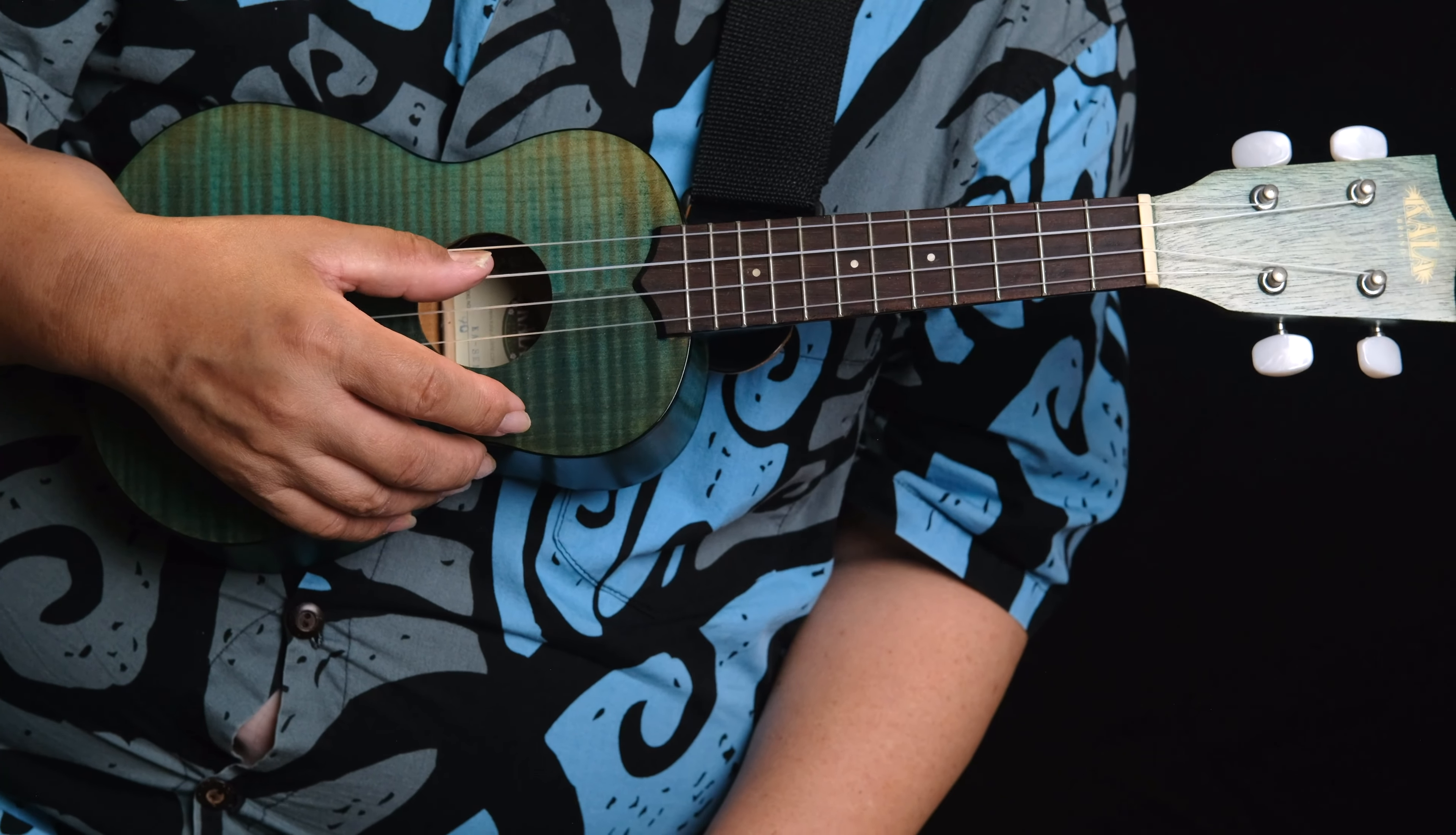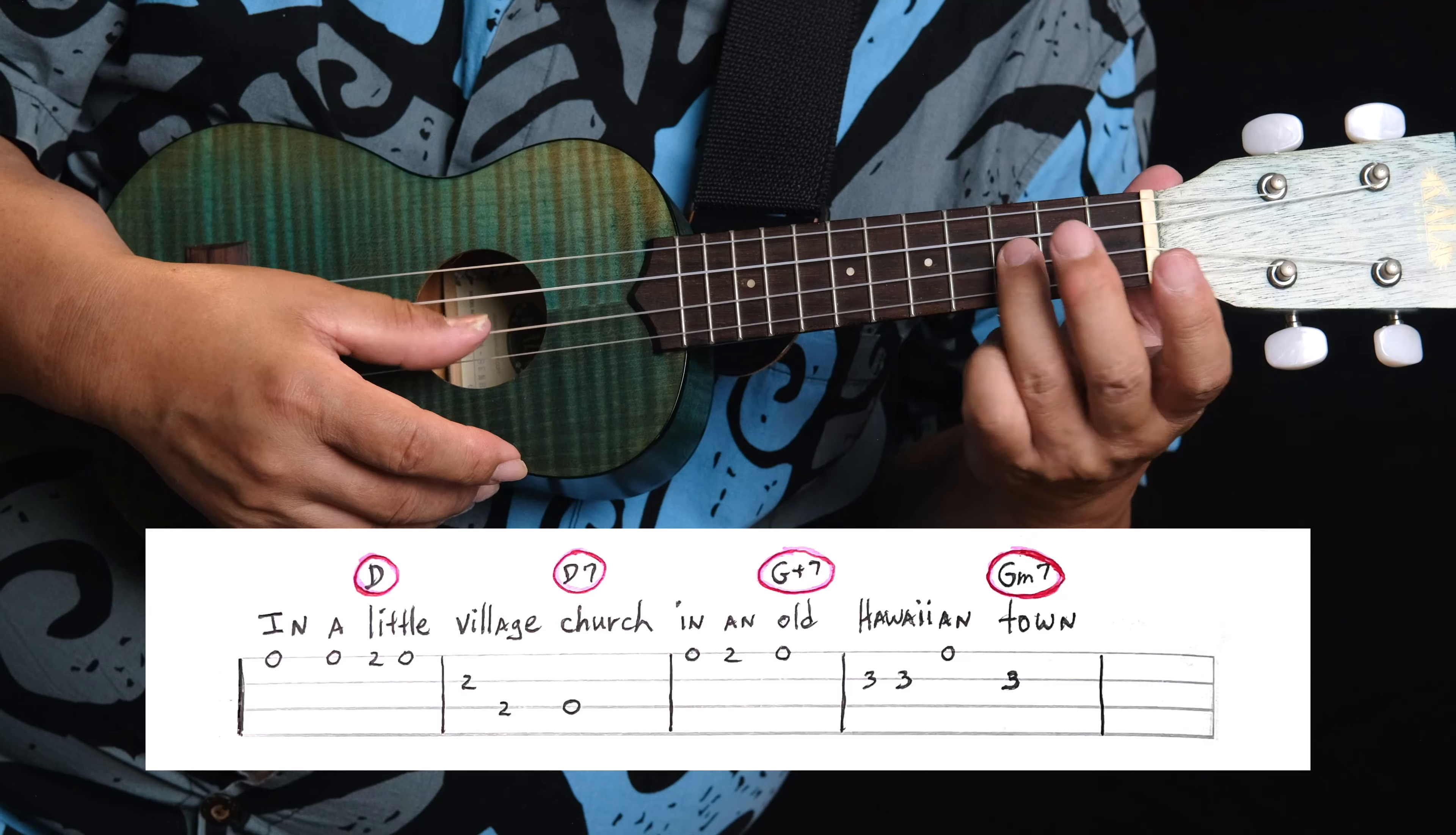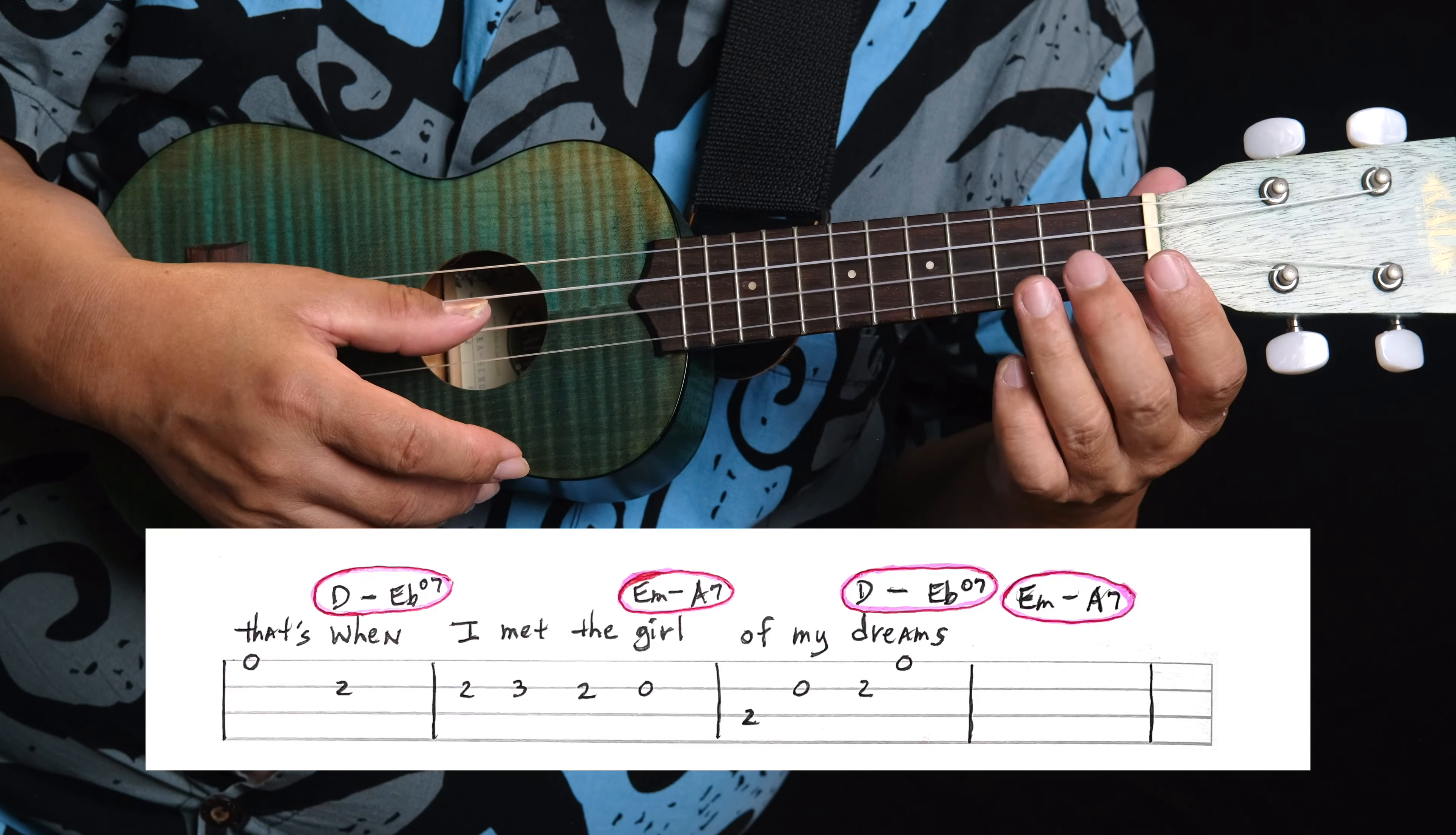Okay, we're going to learn this line by line. Here's the first line. In a little village church, in an old Hawaiian town. Here's the second line. That's when I met the girl of my dreams.